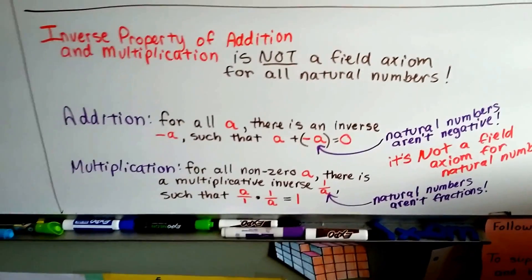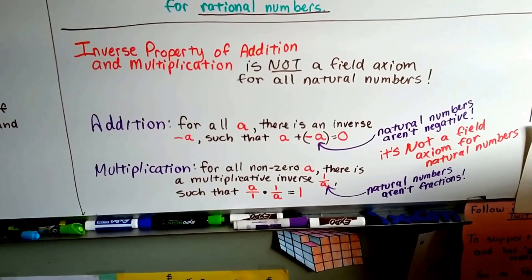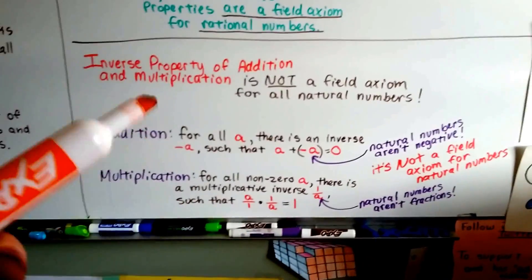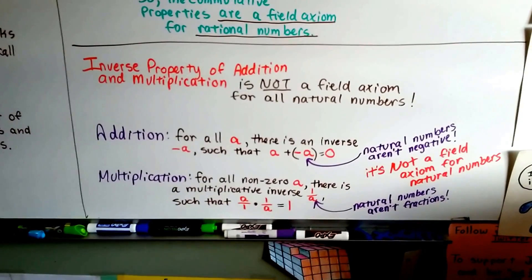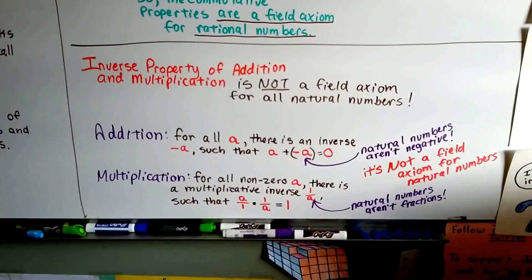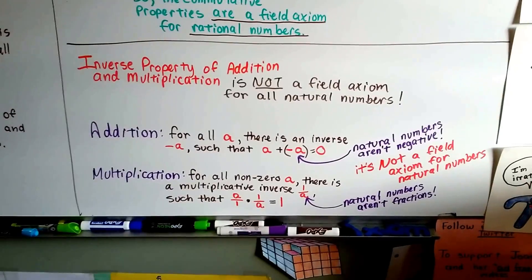Now it works for rational numbers because they can be fractions and negative, can't they? And it would work for real numbers because that includes all rational numbers. But it doesn't work for natural numbers, so it's not a field axiom for natural numbers.